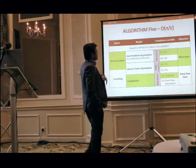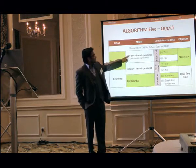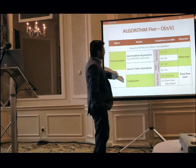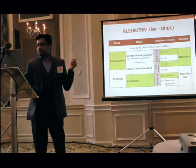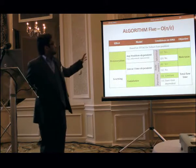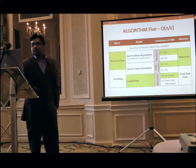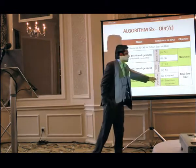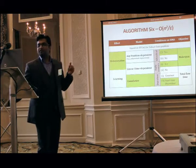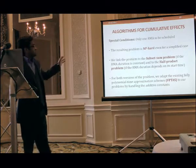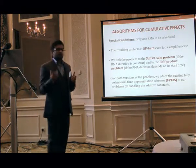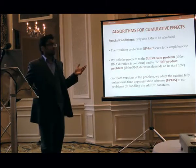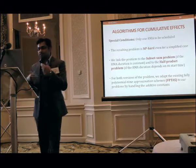Another algorithm deals with cumulative effects. Having covered positional and time-dependent effects, cumulative models represent a new family — and these turn out to be NP-hard. We therefore create an FPTAS (fully polynomial-time approximation scheme) that solves the problem in order N/ε time. For another cumulative problem with start-time-dependent durations, we have a separate algorithm solving it in order N²/ε time. The logic behind these approximation schemes is that they relate to the subset sum problem and the half-product sum problem, so existing FPTAS designs were modified accordingly.